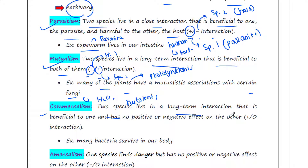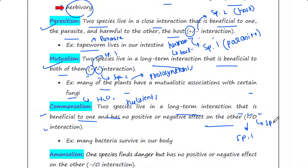The next type of interaction is commensalism. In commensalism, two species live in a long-term interaction that is beneficial to one and has no positive or negative effect on the other. This is denoted as a plus-zero interaction: species one is getting benefited and species two is not having any positive or negative effect.